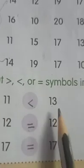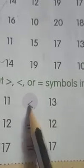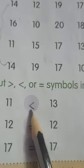Again we have some comparisons. For 11 and 13, 11 is the smaller one and 13 is the bigger one, so 11 is less than 13. These two are equal, so 12 equals 12, and 17 equals 17.